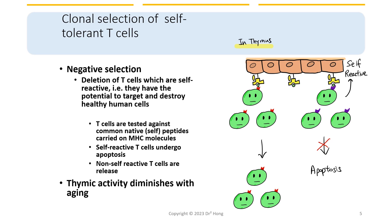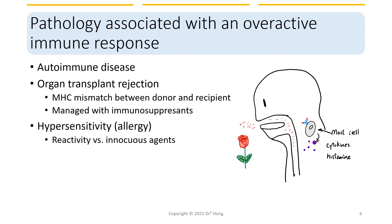These self-reactive T cells undergo apoptosis. Non-self-reactive T cells will survive the negative selection process and proliferate. Notice that activities in the thymus decline with age, and B cells also undergo a similar selection process in the bone marrow. When immune cells cannot recognize self and non-self, it will lead to autoimmune diseases and hypersensitivity when the immune system is overreacted. We'll discuss these items in later lectures in the series.